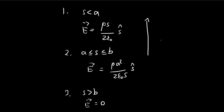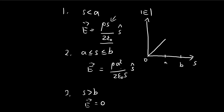We can graph the electric field magnitude versus s. The first region is a linear function — constants times s — so it rises in a straight line up to point a. From a to b, it's proportional to 1/s, so it curves downward. Once we reach b, it drops abruptly to zero. That's what the graph looks like.